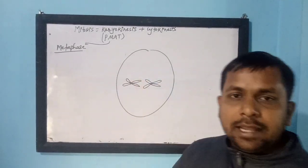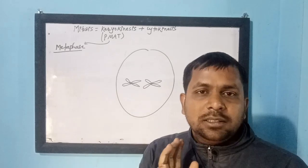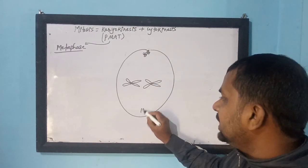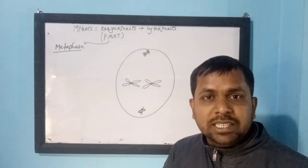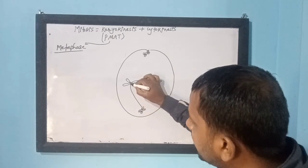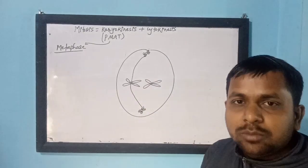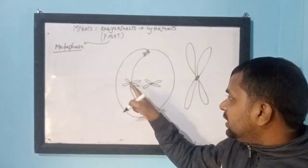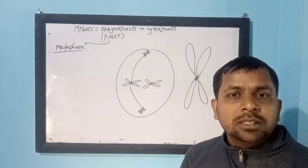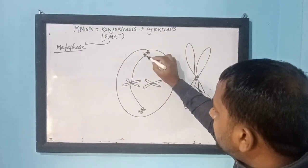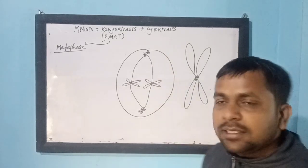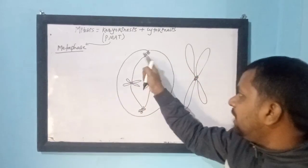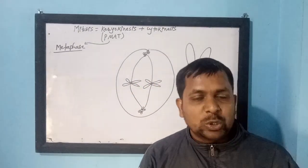All 46 chromosomes are arranged in the equatorial plane of the cell. The spindle fibers that started forming in prophase are now fully formed and get attached to the centromere of each chromosome from both poles. Spindle fibers from both ends come and attach to the centromere of each chromosome.